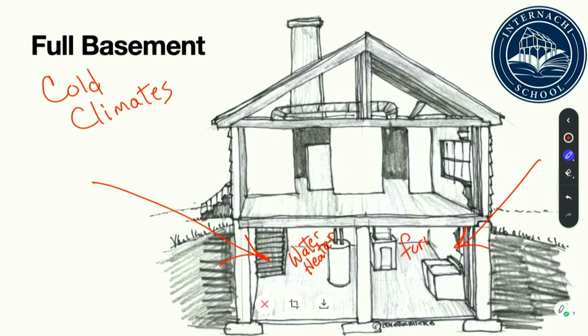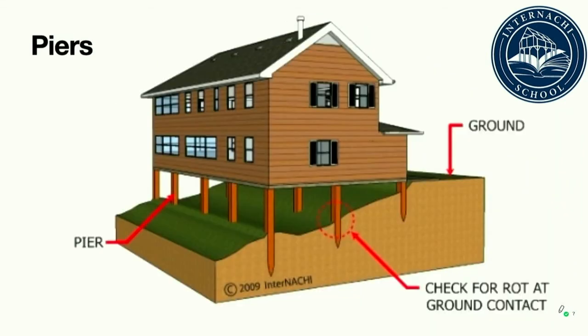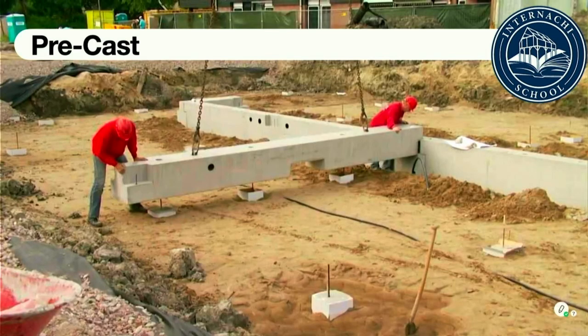The foundation walls are supported by footers or footings. Pier foundations, like slab-on-grade foundations, are typically installed in areas that do not have the proper type of soil to support a full basement foundation. Pre-cast wall sections are cast in a factory and shipped to the construction site, then lifted into place on a simple gravel footing and bolted together, after which the wall sections are sealed.